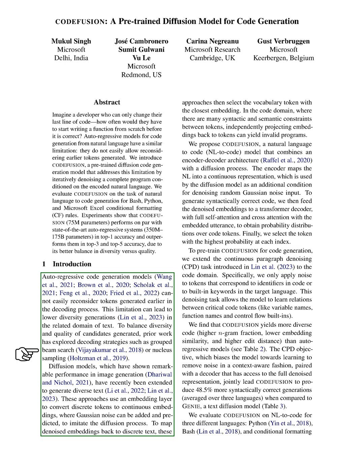This can lead to less diverse generations in the related domain of text. To strike a balance between diversity and quality of the generated candidates, previous studies have explored decoding strategies like grouped beam search or nucleus sampling.